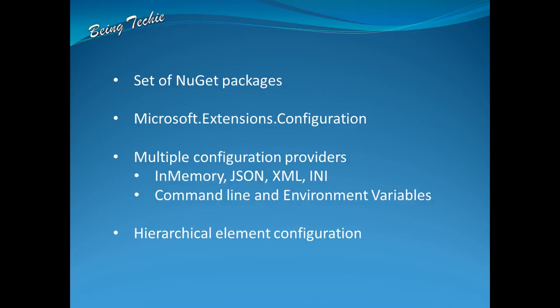Now let's move on to the new configuration system. As I mentioned, ASP.NET Core or .NET Core is essentially a redefined set of new NuGet packages, so as expected, even the configuration system is a set of NuGet packages. The primary package is Microsoft.Extensions.Configuration. The new configuration system supports multiple file formats — JSON, XML, INI — as well as in-memory configuration, command-line arguments, and environment variables. Each of these is its own individual NuGet package. Another feature is hierarchical element configuration, which I will demo shortly.